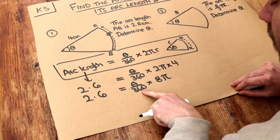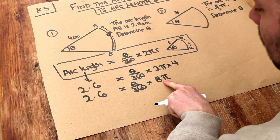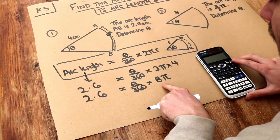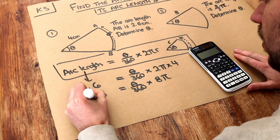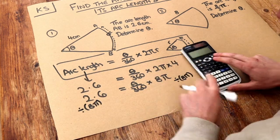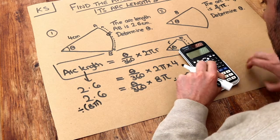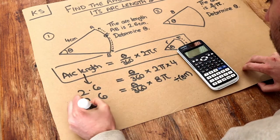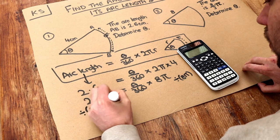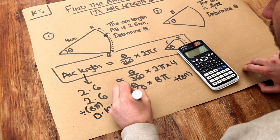Now θ's been divided by 360, then you're timesing it by 8π. We want to get rid of the times by 8π, so we divide both sides of the equation by 8π. So we do 2.6 divided by 8π on our calculator, and that gives you 0.10345. I'll just put lots of decimal places at the moment.